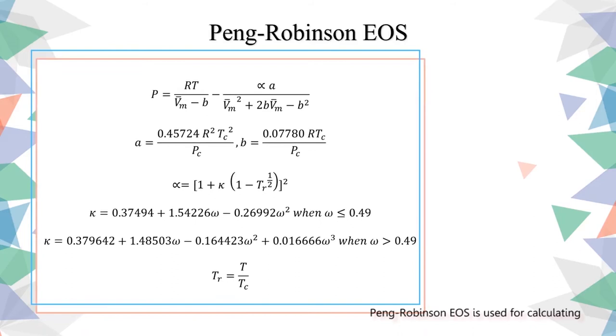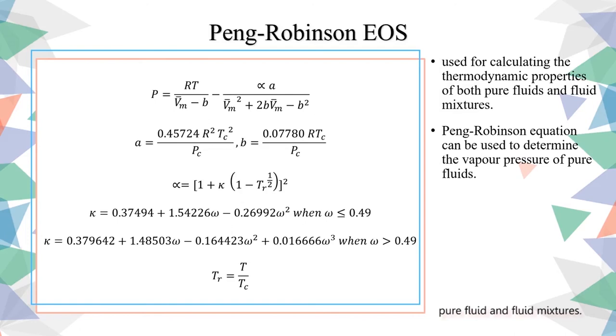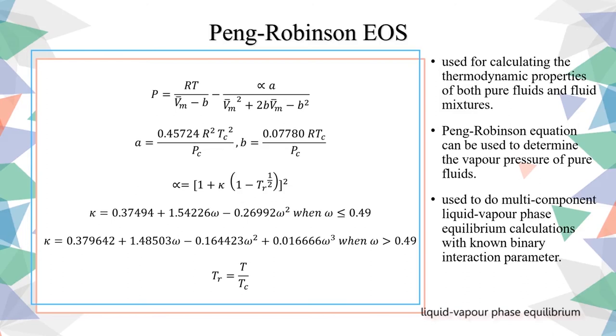Peng-Robinson equation of state is used for calculating thermodynamic properties such as the vapor pressure of both pure fluids and fluid mixtures. It is also used to do multi-component liquid-vapor phase equilibrium calculations with known binary interaction parameters.